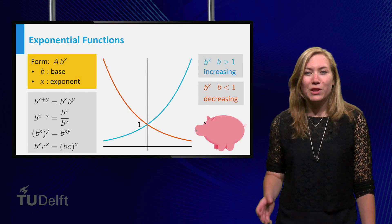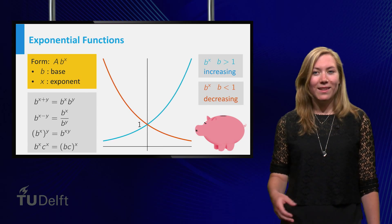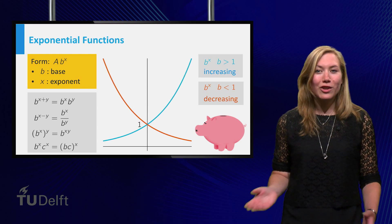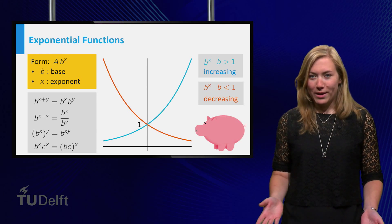The graph of the exponential function b to the power x is increasing if b is larger than 1 and decreasing if b is smaller than 1.